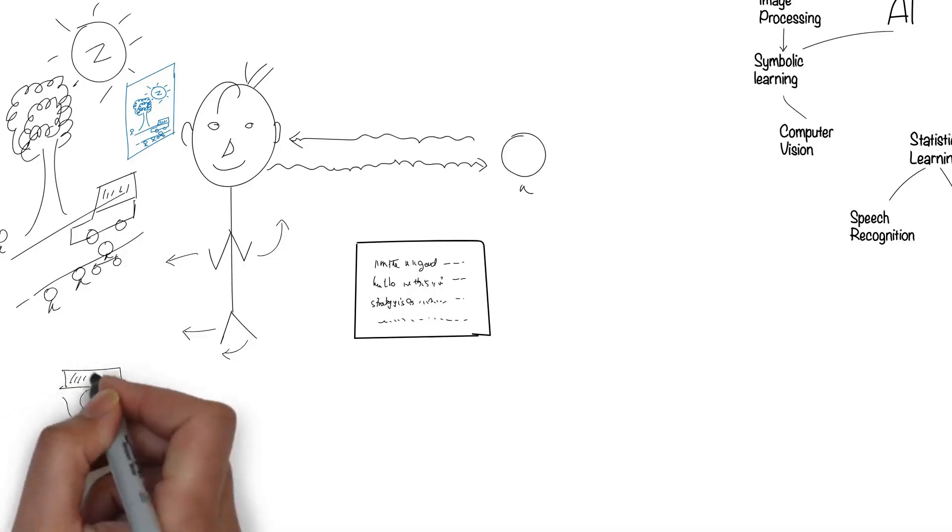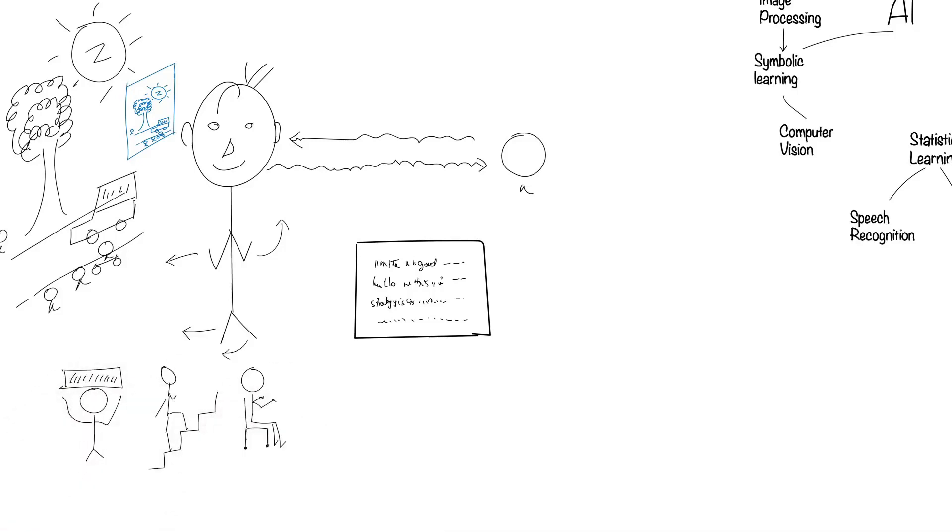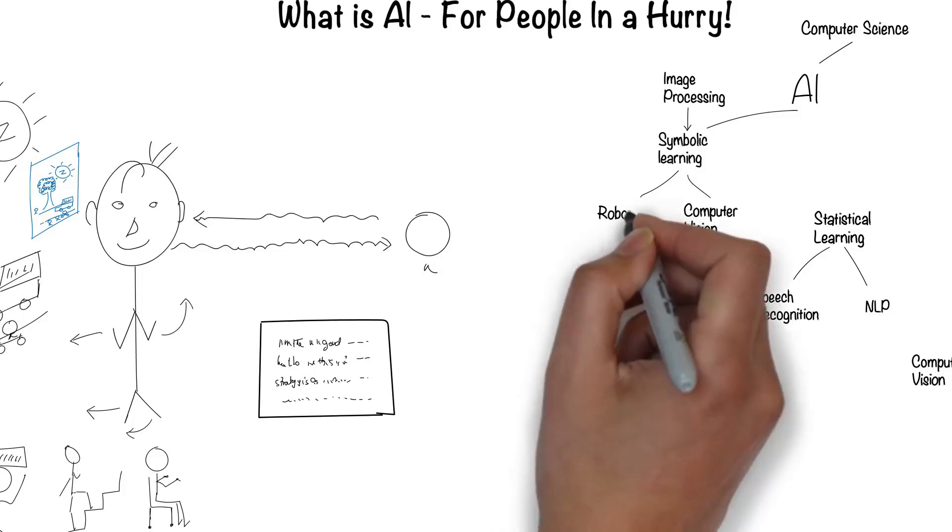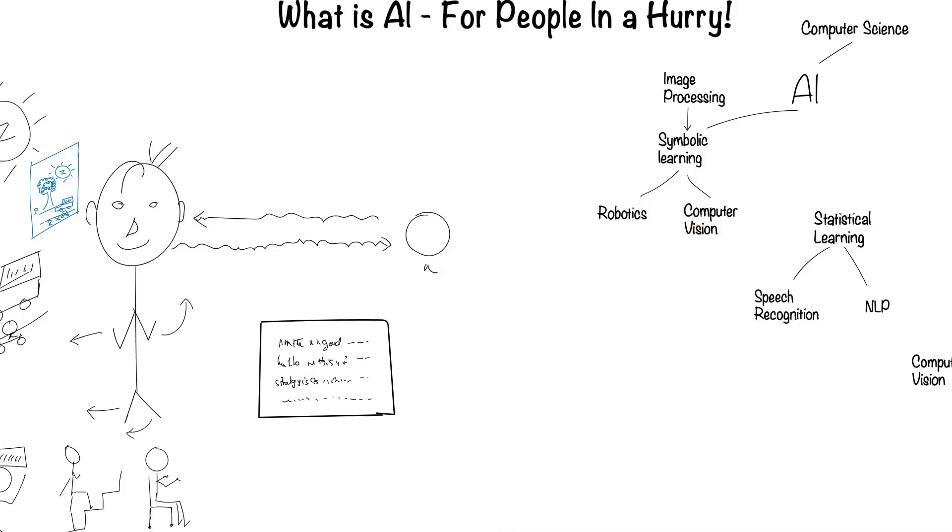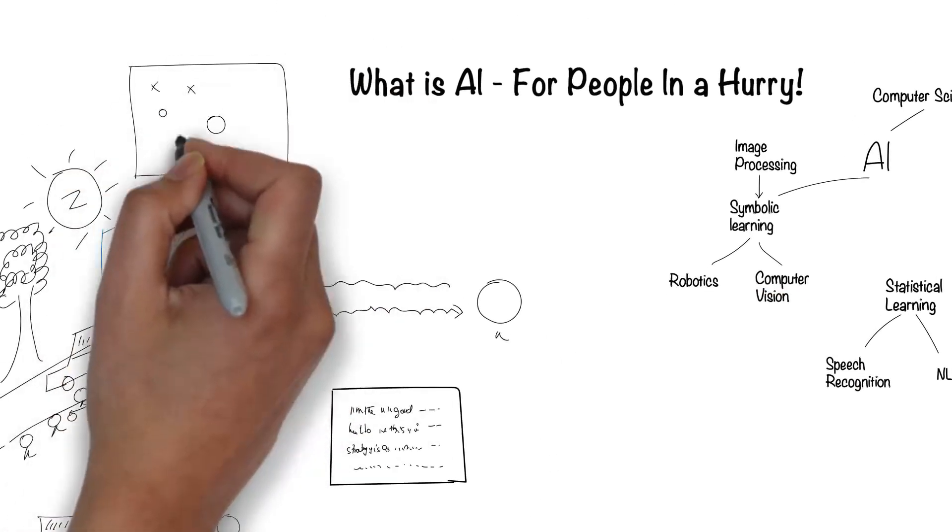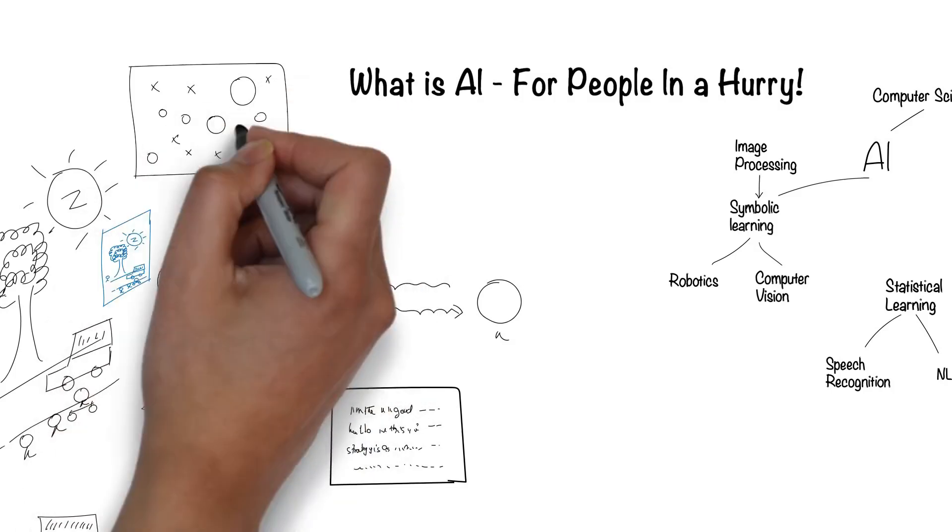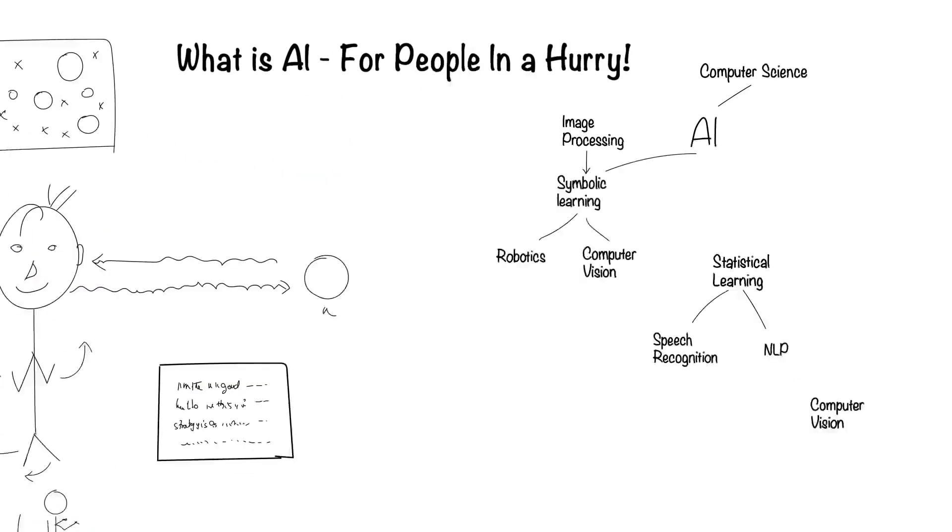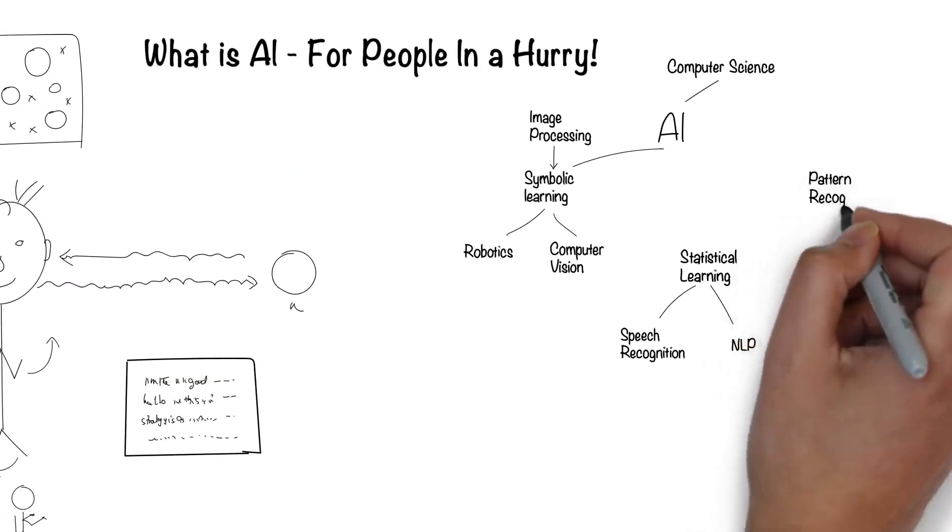Humans can understand their environment and move around fluidly. This is the field of robotics. Humans have the ability to see patterns, such as grouping of like objects. This is the field of pattern recognition.